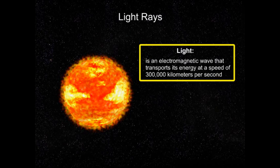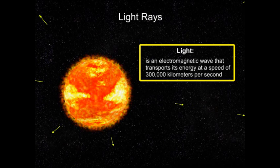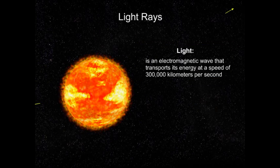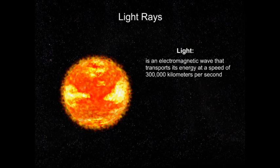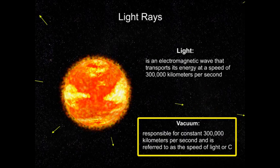Light is an electromagnetic wave that transports its energy at a speed of 300,000 kilometers per second. This constant speed is how fast light travels in a vacuum and is referred to as the speed of light, or C.